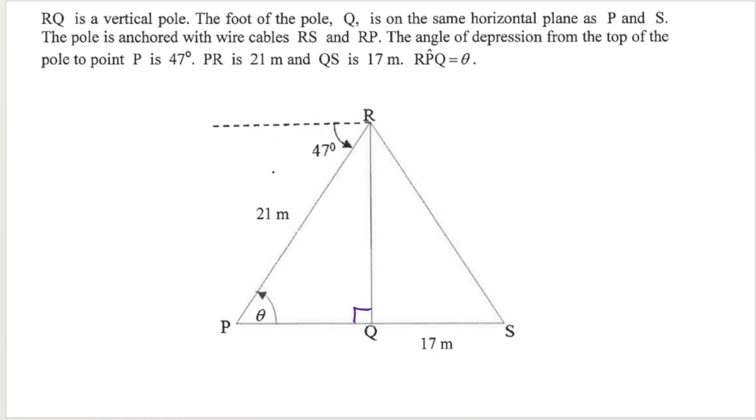PR is 21 meters, this length over here, and QS is 17 meters. QS is this little distance over there. They also give me the fact that angle RPQ is theta.